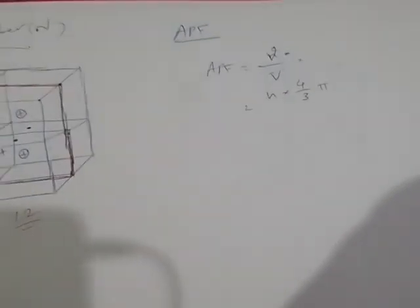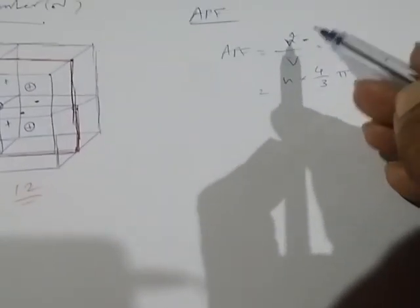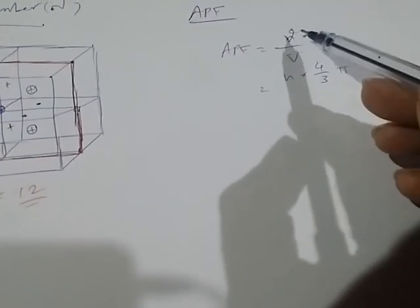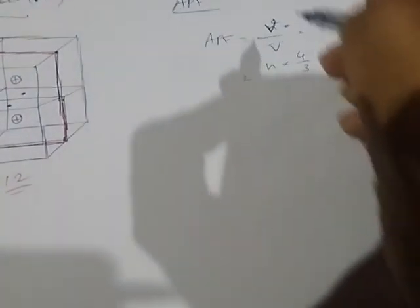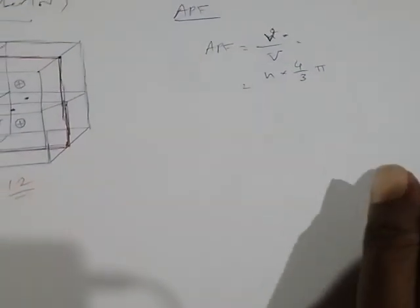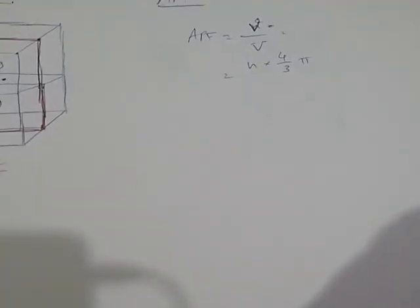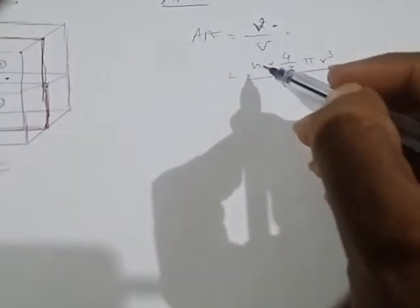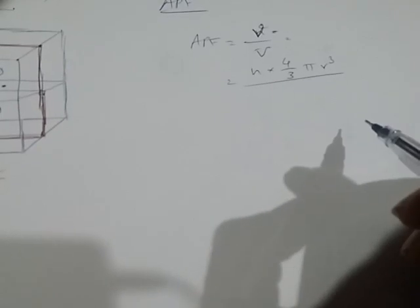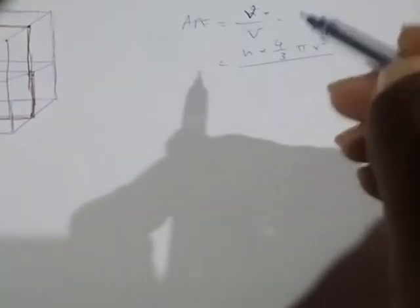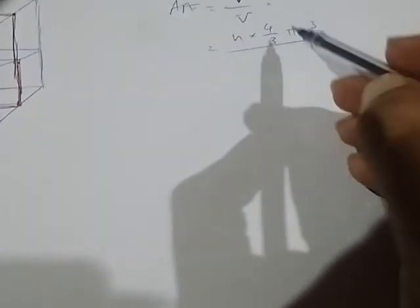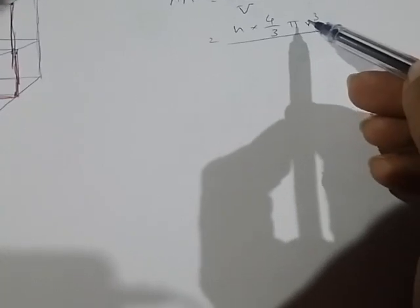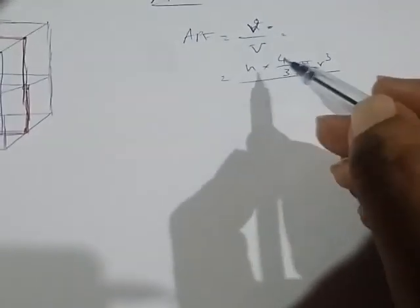The next parameter is the atomic packing factor, with formula small v divided by capital V — the total volume occupied by atoms per unit cell divided by total volume of the unit cell. The total volume occupied is calculated using n into (4/3)πr³, where n is the number of atoms per unit cell, equal to 4, and 4/3πr³ is the volume of a sphere, since atoms are considered spherical.